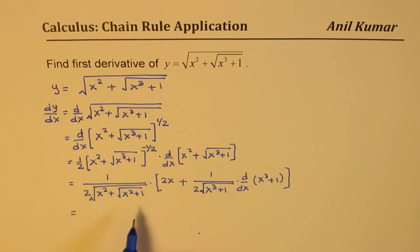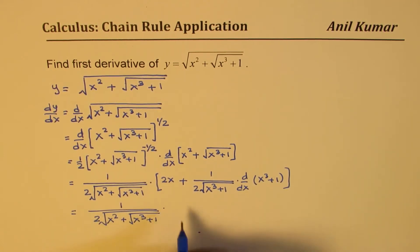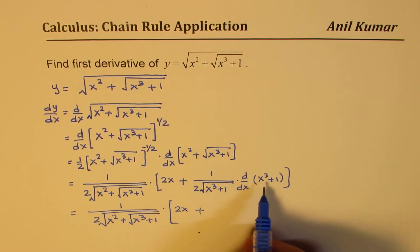So we have here 1 over 2 square root of x square plus x cube plus 1, times this is 2x plus this derivative is 3x square, divided by 2 square root of x cube plus 1. Do you see that?